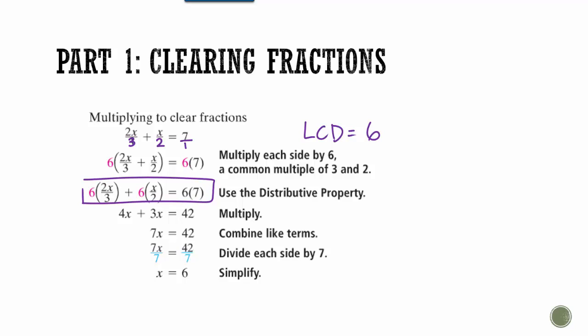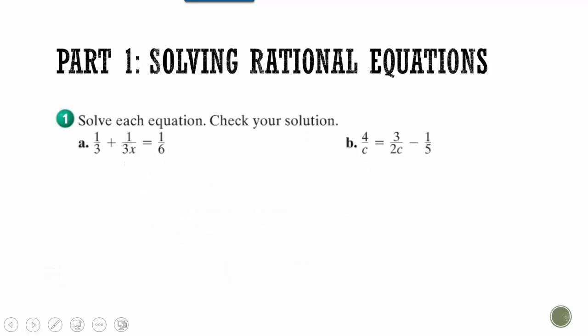We can see here that when we do 6 divided by 3, that just simplifies to 2. And 2 times 2x gives you 4x. 6 divided by 2 gives me 3. That's where we got 3x. And then nothing crosses off here, so we get 42. Now everyone should be able to solve an equation that looks like this guy here. And we get an answer. So let's try that with some rational expressions.